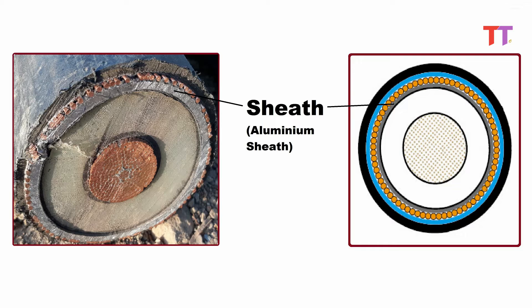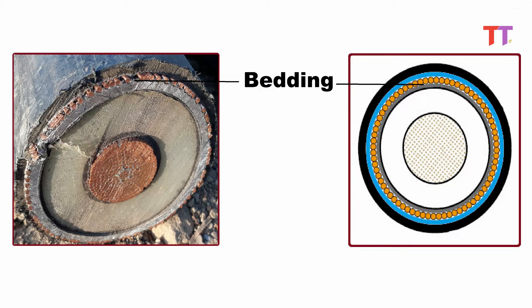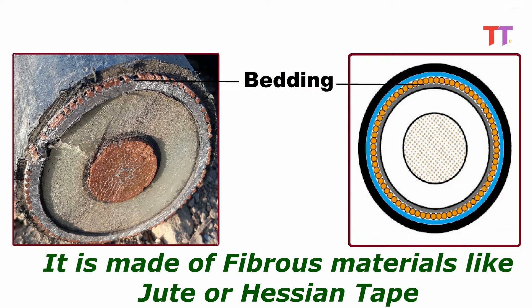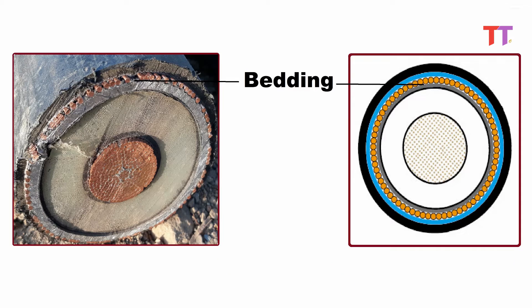The aluminum sheath is used to hold the multiple conductors inside the cable together. A thin layer of bedding can be seen in between the sheath and armoring. It is made of fibrous materials like jute or hessian tape. Bedding is done to protect the sheath from mechanical injury due to armoring.